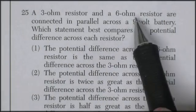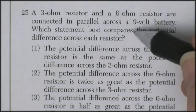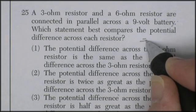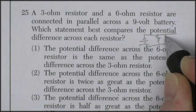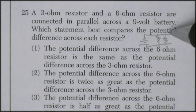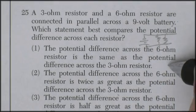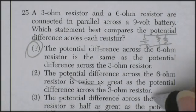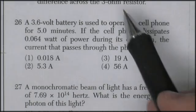Question 25. A 3 ohm resistor and a 6 ohm resistor are connected in parallel across a 9 volt battery. Which statement best compares the potential difference across each resistor? Well, if here's your battery, and here's your 6 ohm, and here's your 3 ohm. In parallel, they each see the same potential difference from the battery. So the potential difference across the 6 ohm is the same as the potential difference across the 3 ohm.